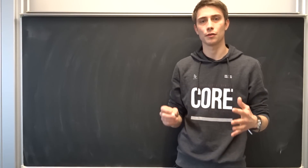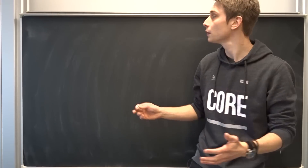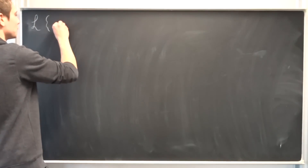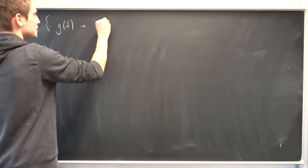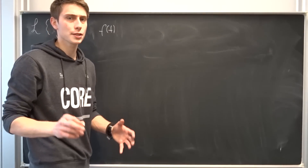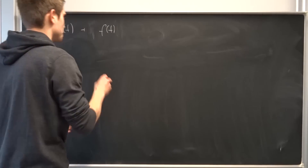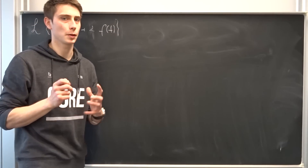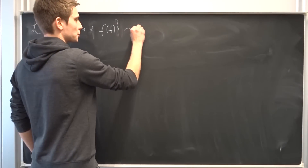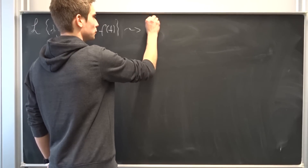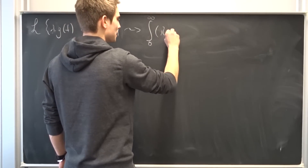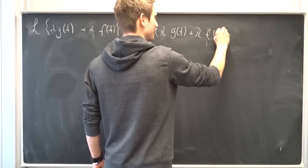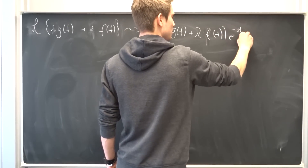We are going to say there are two time-dependent functions g and f, and we are going to take a look at the Laplace transform of these. So the Laplace transform of g(t) plus f(t), and we also want to include the case when there is some constant lambda involved — so don't forget your lambda. Now we use the definition of the Laplace transform: this is the improper integral from zero to infinity of λg(t) + λf(t) times e^(−st) dt.